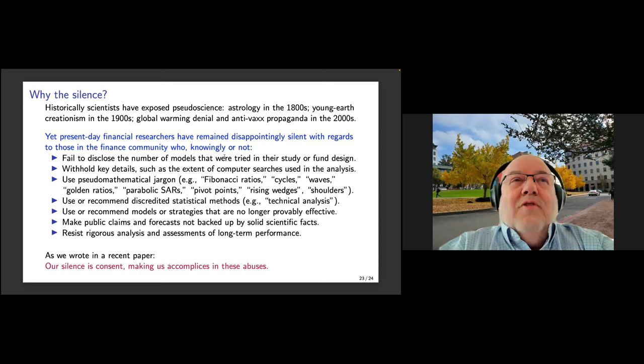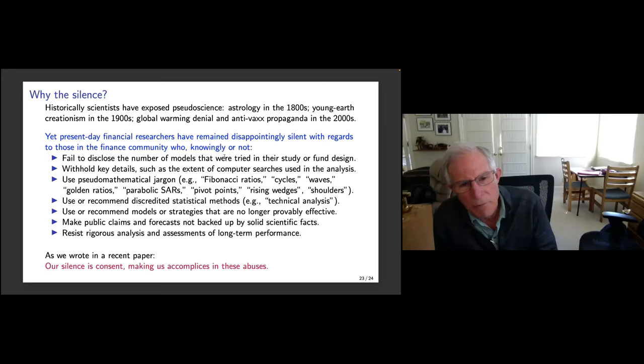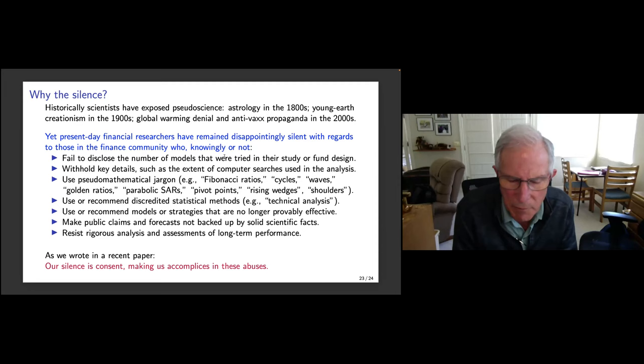Audience member comments that if you substituted fat tail distributions for Gaussian, it would probably make the expected maximum Sharpe ratio even higher. I agree this is definitely worth looking at. Let me mention it to Marcos. We should try to make that a more robust analysis.